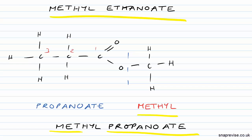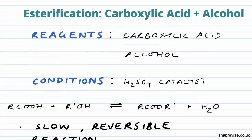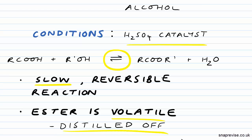So let's have a look at how we make our esters. Esters are made in the process of esterification. There are two ways we're going to look at to make esters. The first is reacting a carboxylic acid with an alcohol, and the second is an acid anhydride with an alcohol. The reagents we're going to use are a carboxylic acid and an alcohol, and we'll use an H2SO4 catalyst. We're reacting a carboxylic acid with an alcohol to form our ester and to form water. You can see it's a reversible reaction — it's quite a slow reaction. Now as our ester is volatile, it can be distilled off, and that's how we obtain it.